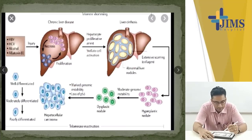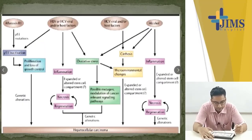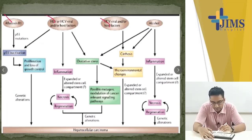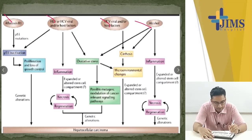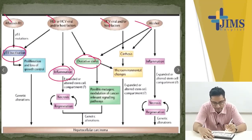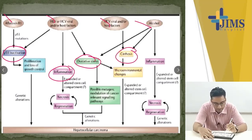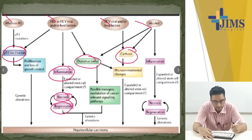The main pathogenic agents include aflatoxin, HBV, HCV, and alcohol. There are many intermediate steps like P53 inactivation, oxidative stress, and inflammation leading to cirrhosis, then necrosis and regeneration, leading to formation of nodules and ultimately hepatocellular carcinoma.